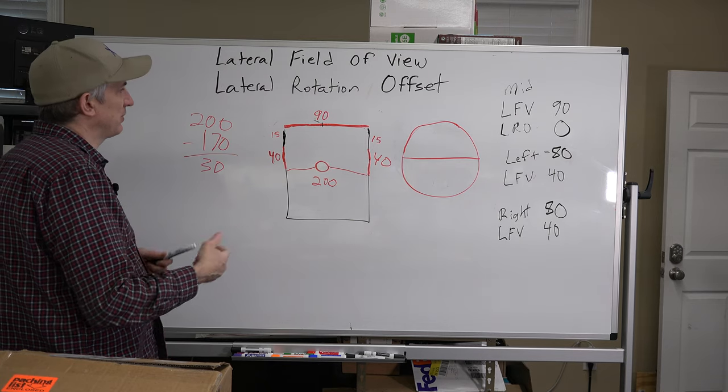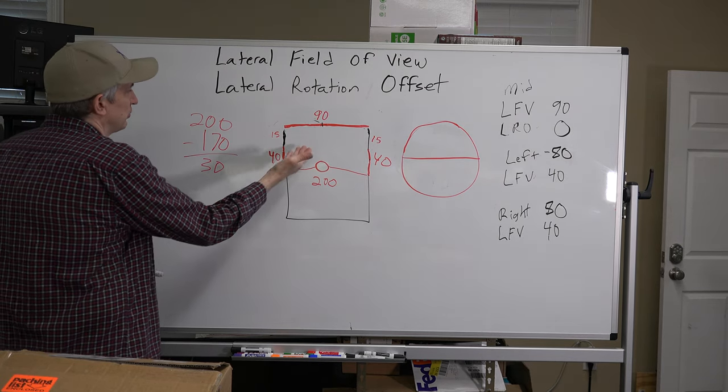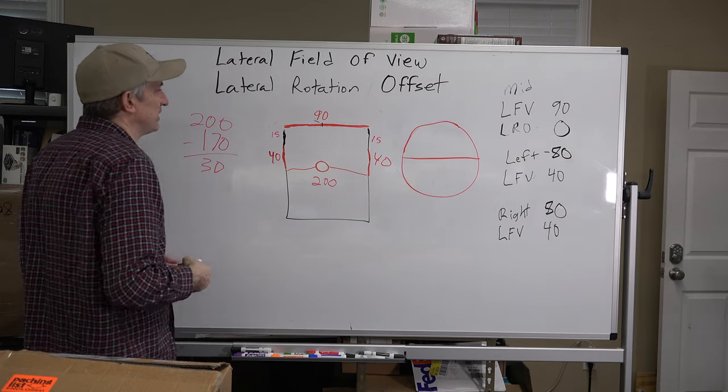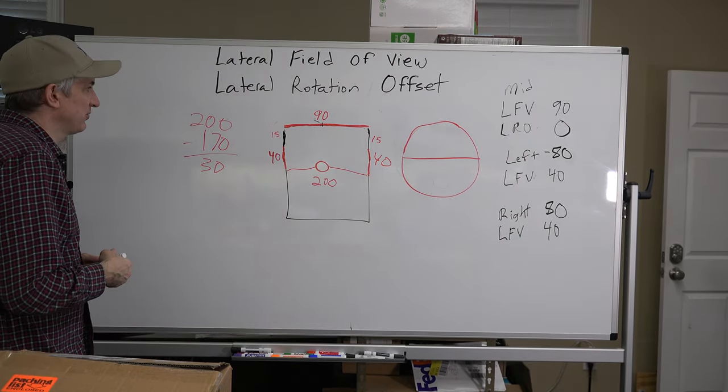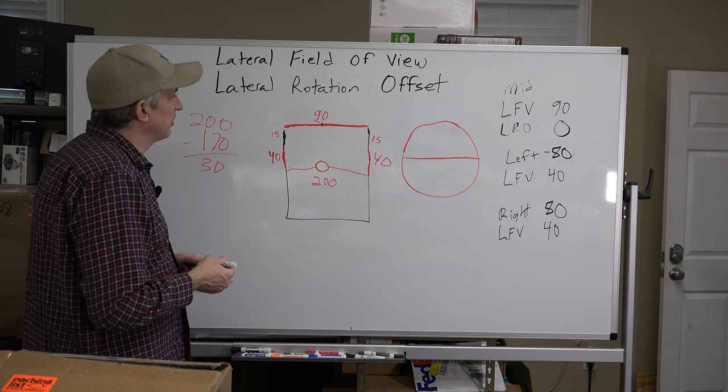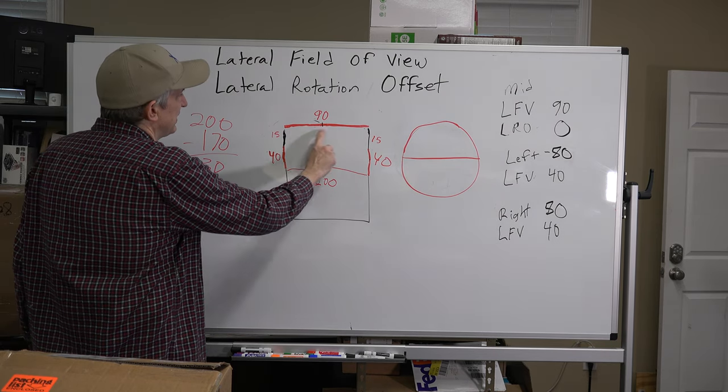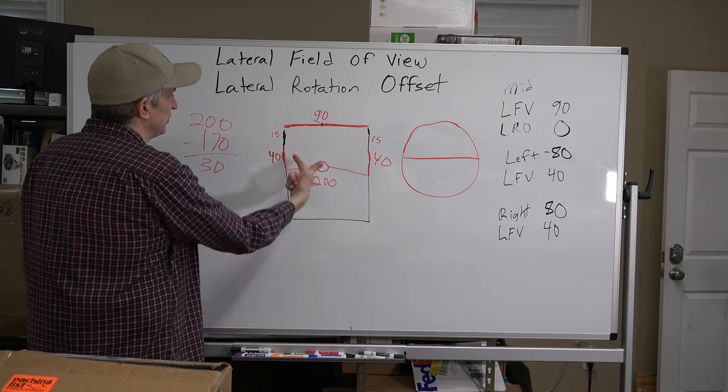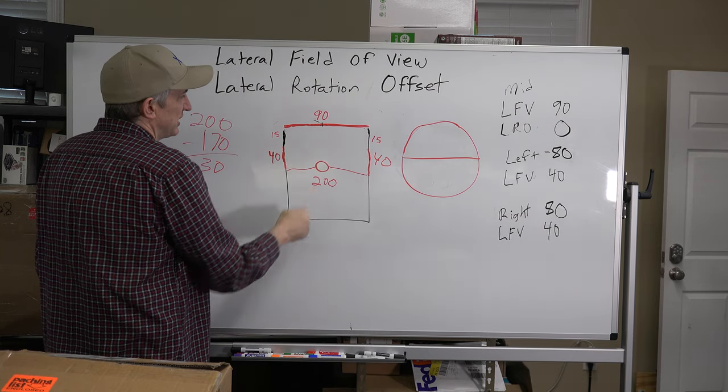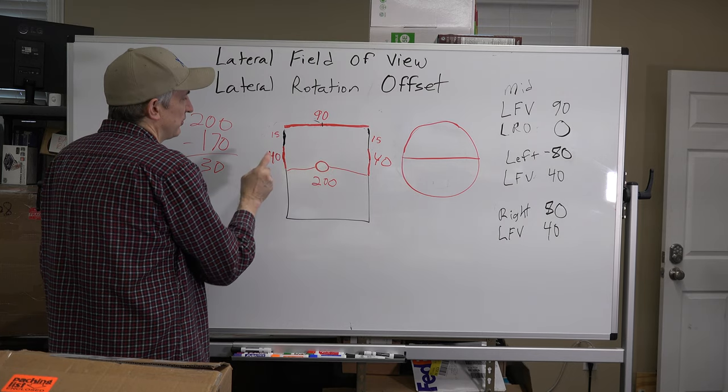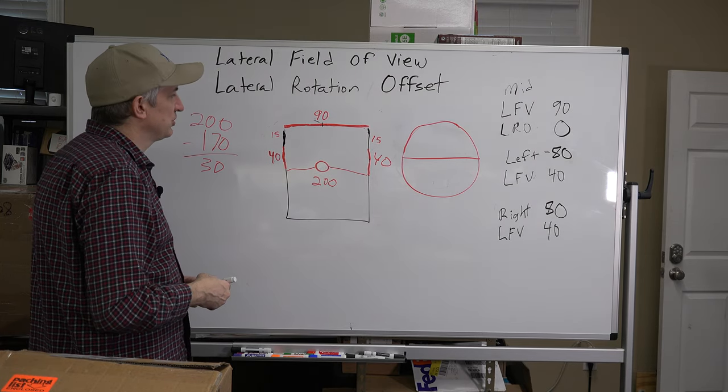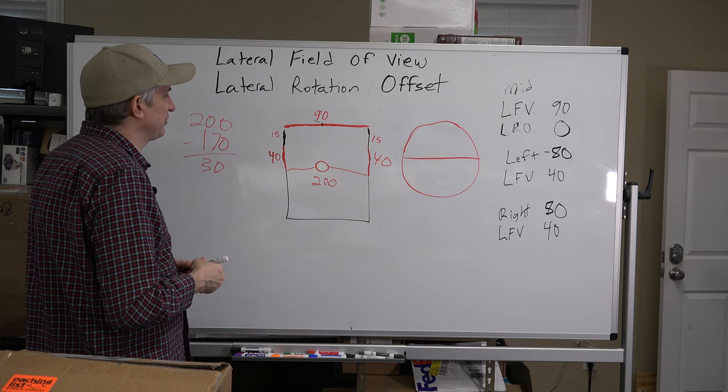And it's the trickiest number to come up with, is how far do you rotate the left screen and the right screen, that being the lateral rotation offset, to get a correct number. We've decided 90 degrees is our forward field of view. We have 15 degrees of dead space on either side, and then we have a monitor for the left and the right window, which uses 40 degrees of lateral field of view.